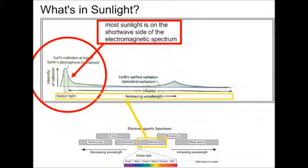This diagram illustrates what is in sunlight. On the x-axis, you can see that we have taken a portion of the electromagnetic spectrum, and that goes from ultraviolet, visible light, and infrared, and that's the portion of the electromagnetic spectrum that I've put in a yellow rectangle around.